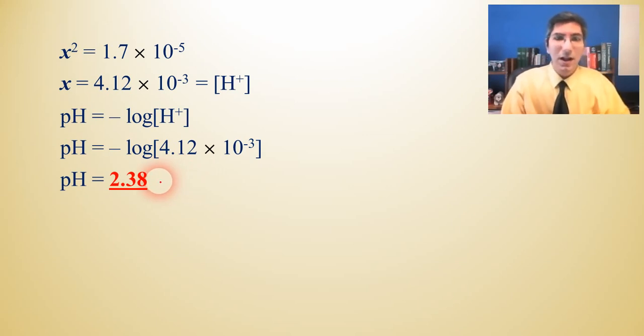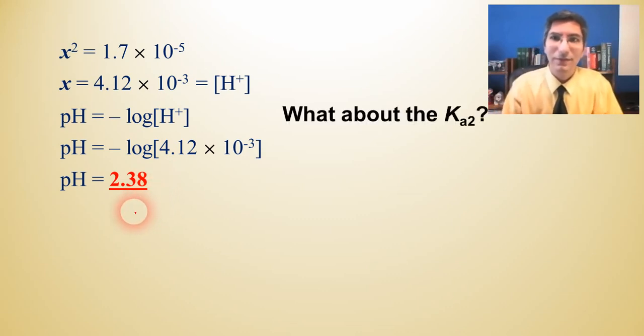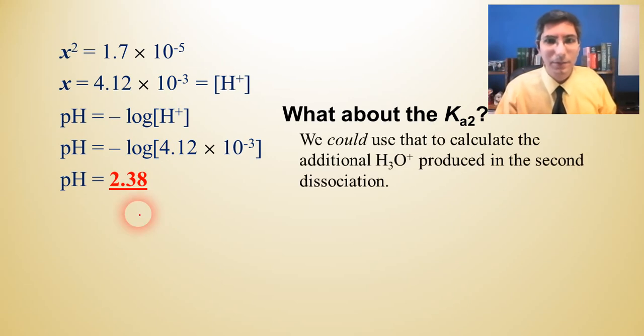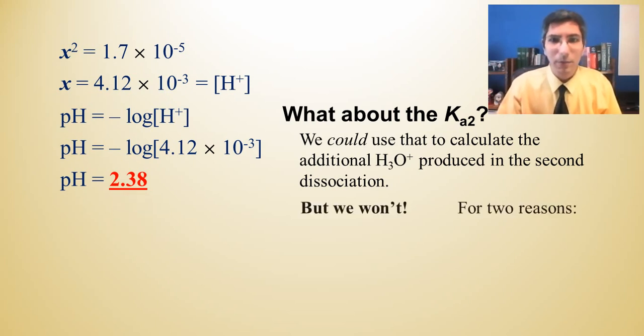Now you might notice that there's something conspicuously absent in this. I completely ignored the Ka2. What in the world did I do that for? That seemed like it should have been important, right? Well, the Ka2, we could have used that to calculate the additional hydronium that was produced in that second dissociation. And there honestly will be a little bit more hydronium produced in the second dissociation. However, we're not going to do that. And there are two reasons for that. And it's not just because we don't want to.